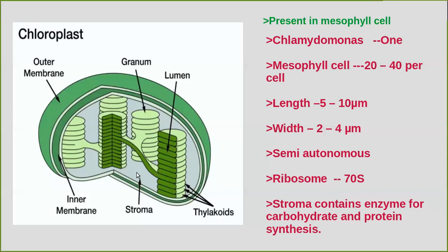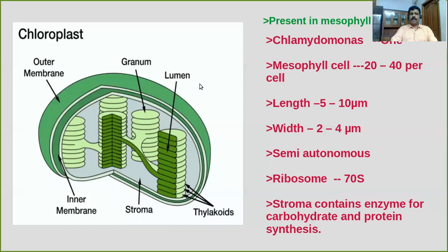Chloroplasts have their own DNA and ribosomes of the 70S type, making them semi-autonomous. The fluid-filled space inside the inner membrane is called the stroma. Inside the stroma, there are numerous sac-like structures called thylakoids, arranged one above the other like a stack of coins. This group of thylakoids is collectively called a granum.